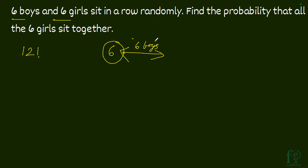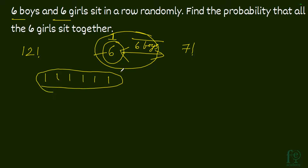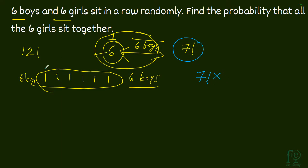How many ways can this be arranged? This is 6 boys plus 1 unit — all 6 girls sitting together considered as a single unit. So this can be arranged in 7 factorial ways. Additionally, these 6 girls themselves can be arranged in 6 factorial ways among themselves. So it will be 7 factorial into 6 factorial divided by 12 factorial.